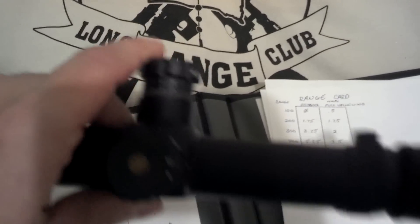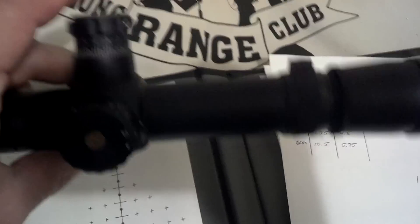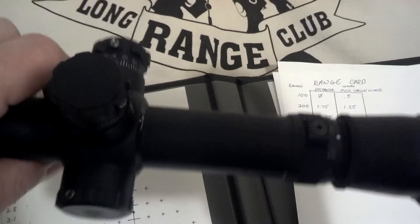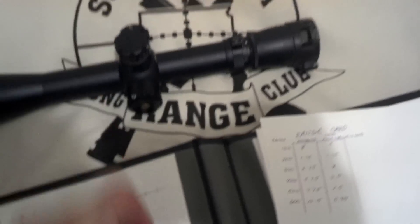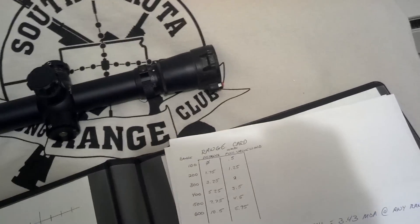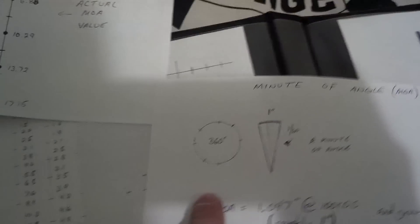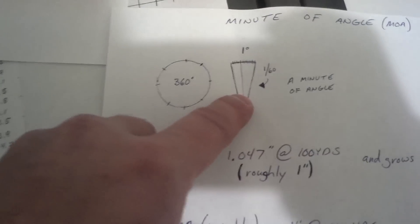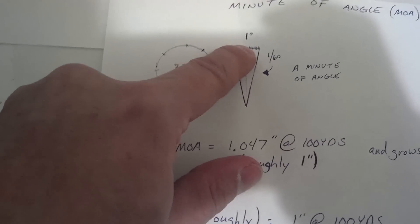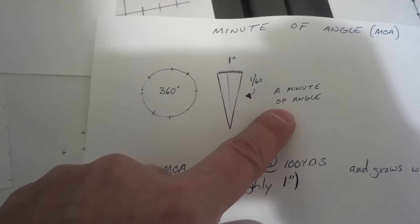Now if you're confused on what a minute of angle is — a minute of angle is one degree out of 360 degrees. If we took one degree and chopped it into 60 pieces, it would be 1/60th of a degree. That's a minute of angle.